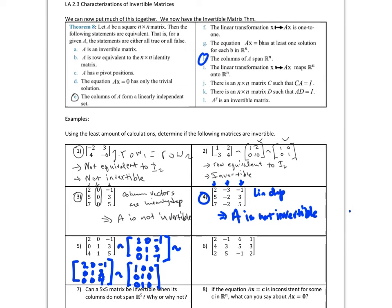For number five, I just did row reduction. I can stop right here because A has n pivot positions. If A has n pivot positions and is n by n, then it's row equivalent to the identity matrix. Therefore, A is invertible for number five.